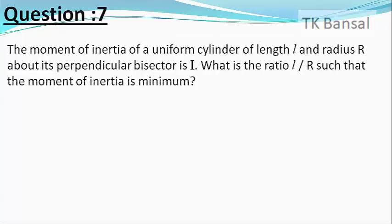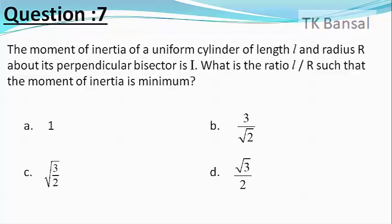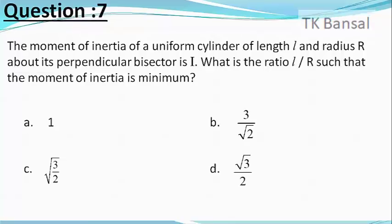The moment of inertia of a uniform cylinder of length L and radius R about its perpendicular bisector is I. What is the ratio L by R such that its moment of inertia is minimum? The choices are 1, 3 by root 2, whole root of 3 by 2, and root 3 by 2.